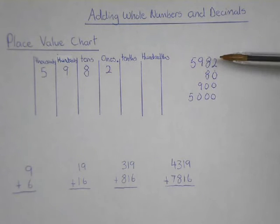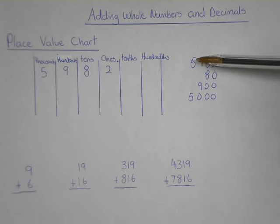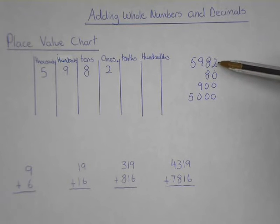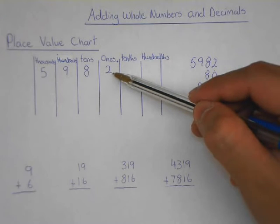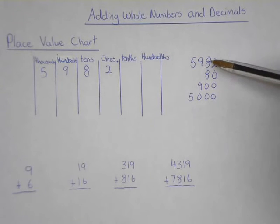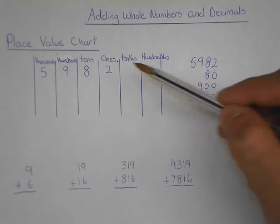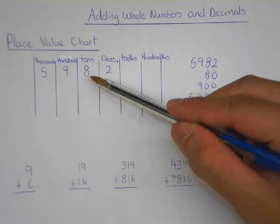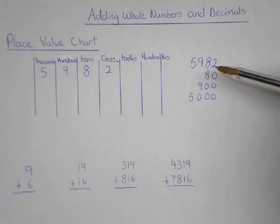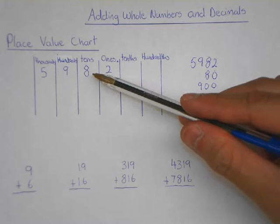Here we have the example 5,982. Each of these numbers in this whole number has a different value. Starting on the right side, we have the number 2. This 2 actually represents 2, because it is simply 2 objects — so it moves over to the 1s column. The next number in 5,982 is 8. This 8 doesn't actually represent 8; it represents 80. So this 8 belongs in the 10s column — think of 10, 20, 30, 40, 50, all the way up to 90. There are 8 of the 10s, so it goes into the 10s column.